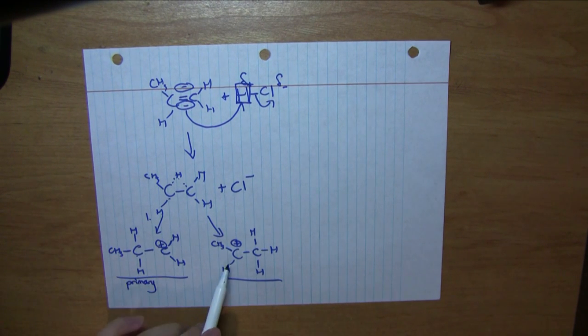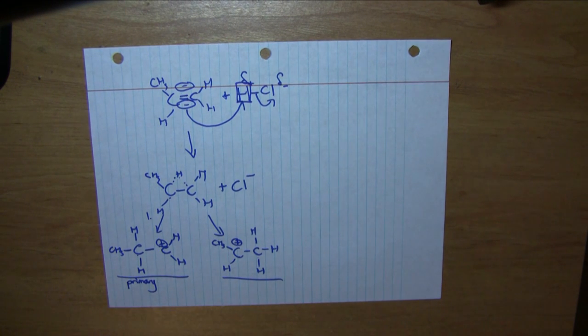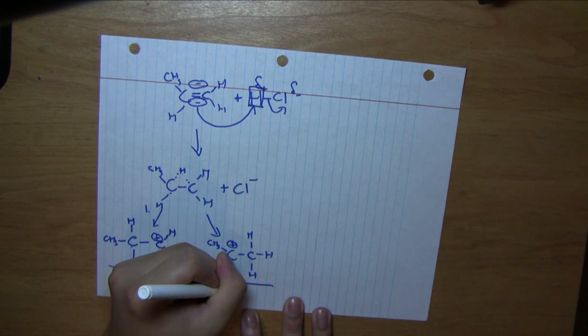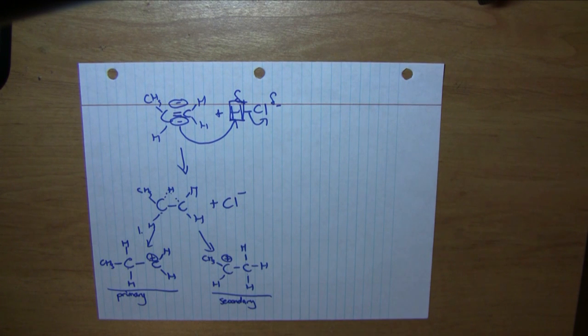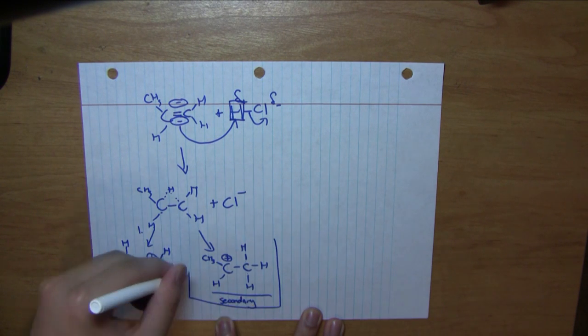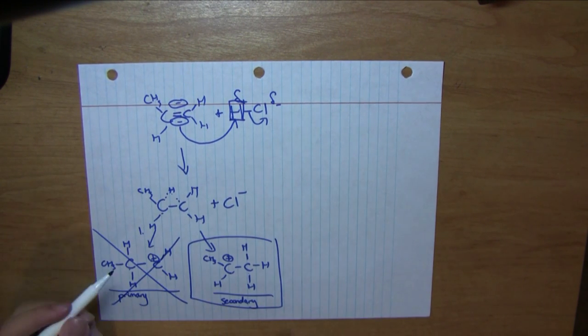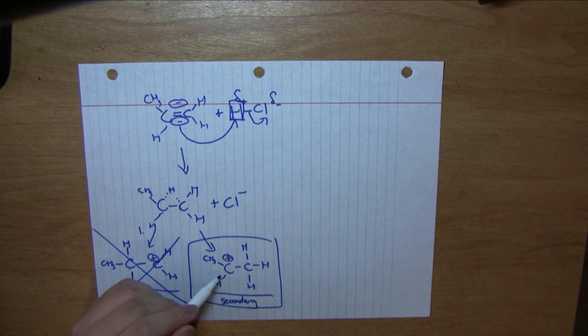But over here, the positive charge is on a carbon attached to two other carbons, making it a secondary carbocation. We know from hyperconjugation and previous rules that a secondary carbocation is much more stable than a primary carbocation. Therefore, the reaction would much rather form this intermediate as opposed to the primary one. Essentially, we form none of the primary intermediate; all of the reaction goes to this secondary intermediate.